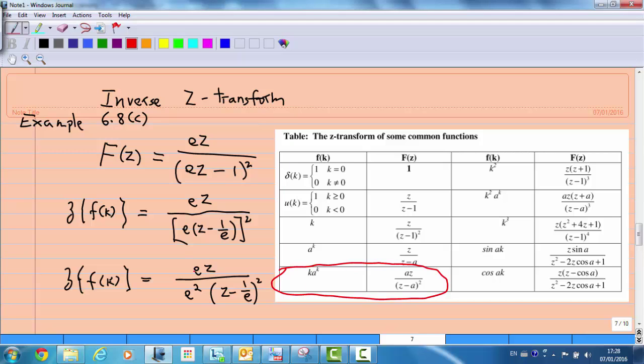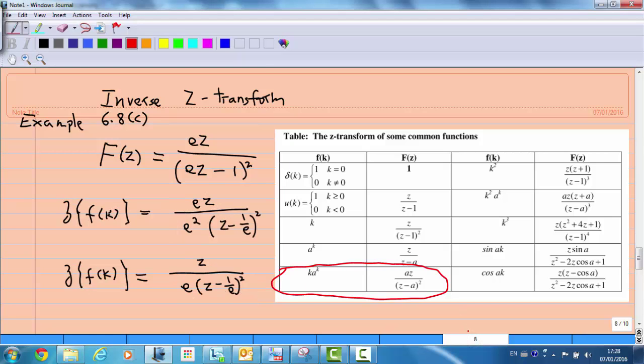Now, these two e can cancel, which gives us z/e times 1/(z - 1/e)².